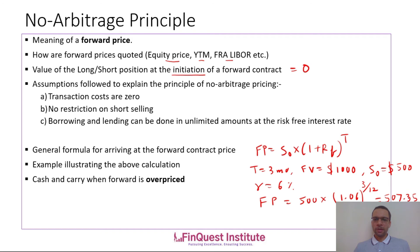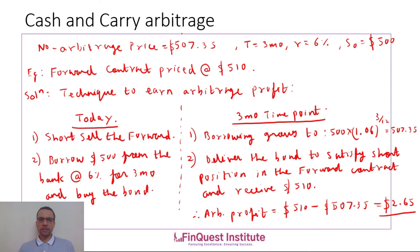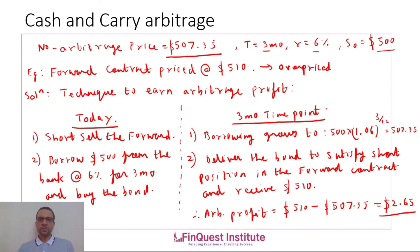We will use this forward price to understand cash and carry arbitrage when a forward contract is overpriced. Extending the same zero coupon bond example: the no-arbitrage price is $507.35, the time to maturity is 3 months, the risk-free rate is 6 percent, and the current price is $500. Now take a scenario where the forward contract is priced at $510. The forward is overpriced because the no-arbitrage price is $507.35 whereas the forward is being priced at $510. Because of this difference there is an arbitrage opportunity — a violation of the no-arbitrage principle — and we can lock in an arbitrage profit today.